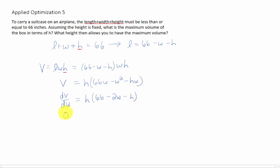Now to find the critical points, we can set that derivative equal to zero. And h is just some constant, it's not going to be zero. So the only way for this first derivative to equal zero is if 66 minus 2w minus h equals zero.